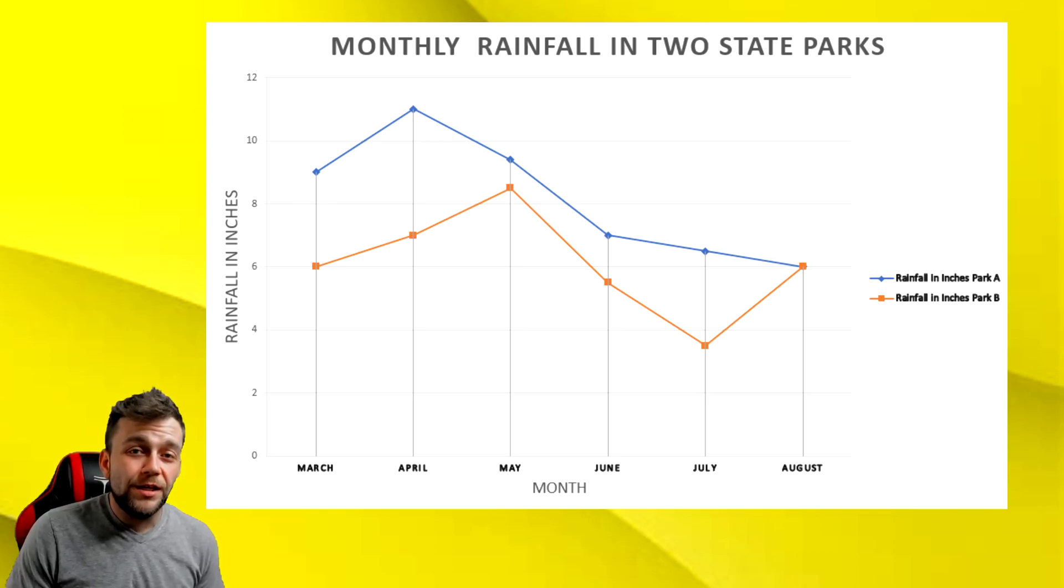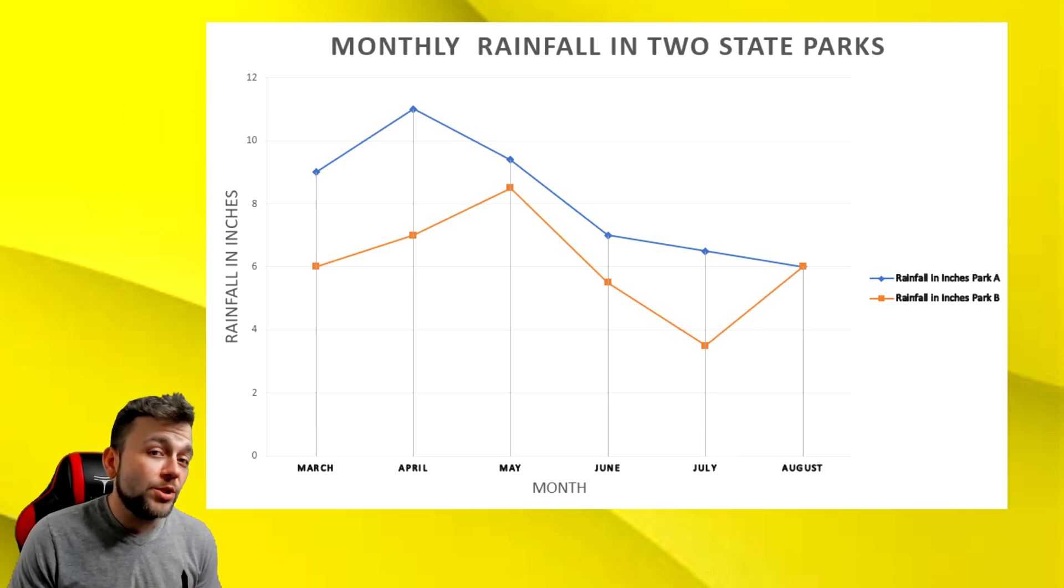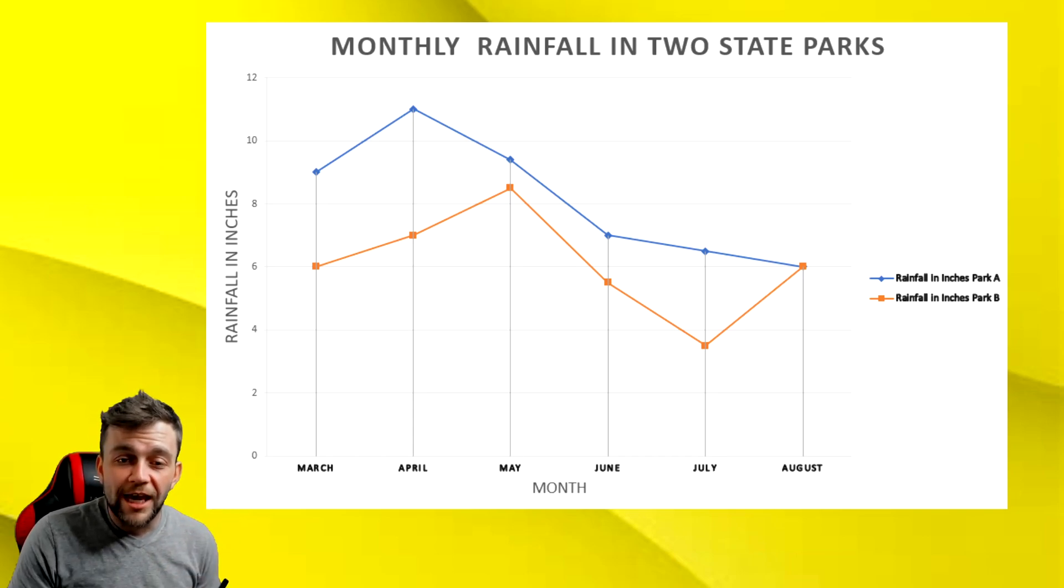Another thing to make a note on is with line graphs, you can have multiple entries of data. So here we have two state parks, but we could have three, four, five different state parks. Or we can compare all of the national parks in a line graph. That's why they're so useful is that you can compare multiple entries to each other. In what month is the biggest difference in rainfall between these two state parks?